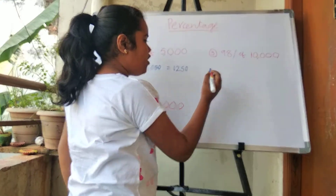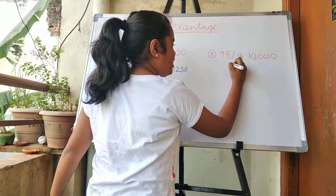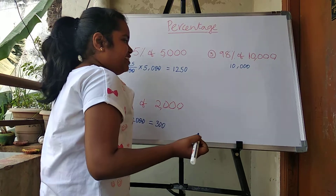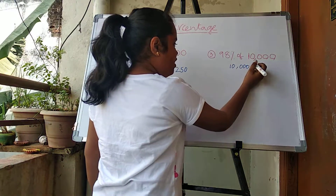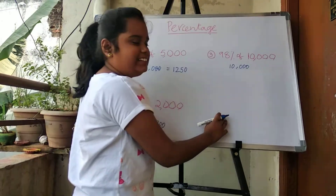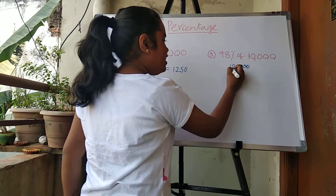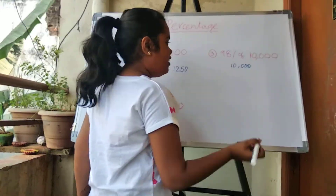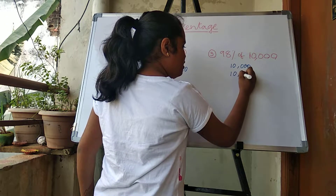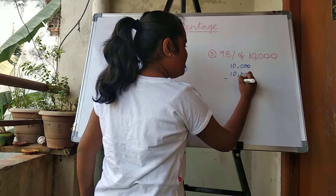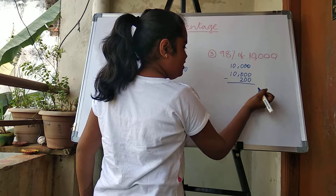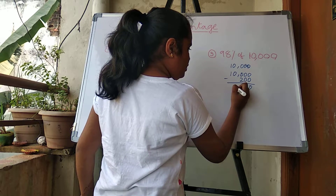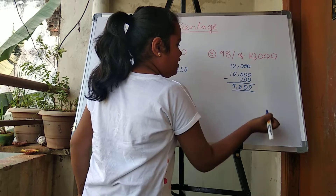Next, 98% of 10,000. First we should take 10,000. We should strike out two zeros — that gives us 100, which is 1%. If we need 2%, it becomes 200. So 10,000 minus 200 is equal to 9,800.